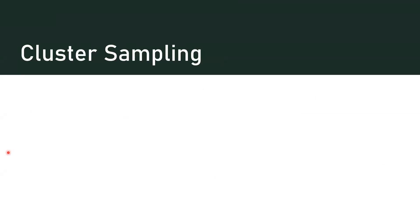The next type is called cluster sampling. When I give you the definition, it's going to sound a little like stratified sampling. But it's different because in this method we do create subgroups, but our subgroups are not homogeneous — they're heterogeneous subgroups. This involves dividing the population into clusters, like neighborhoods or schools, randomly selecting a sample of the clusters. The main difference from stratified sampling: stratified uses homogeneous subgroups while cluster sampling uses heterogeneous clusters.